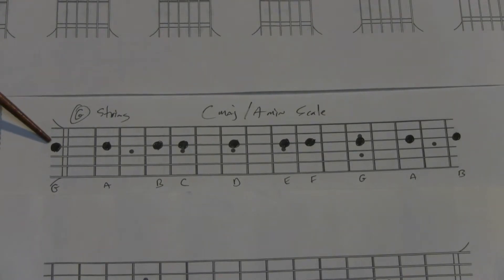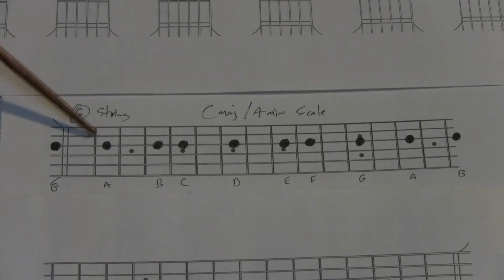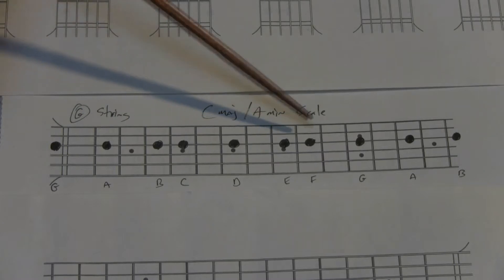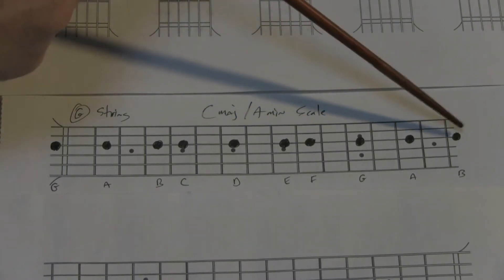And we start with the open G here. And then A, B, C, D, E, F, G, A, B.